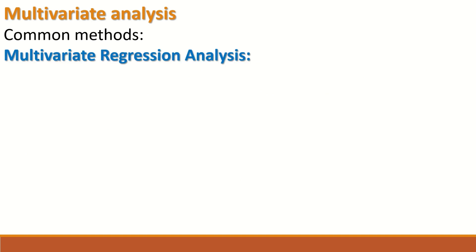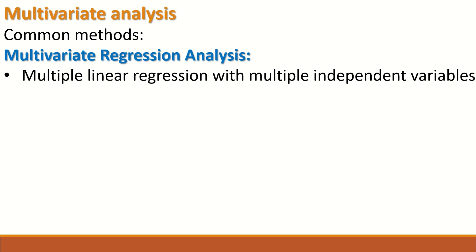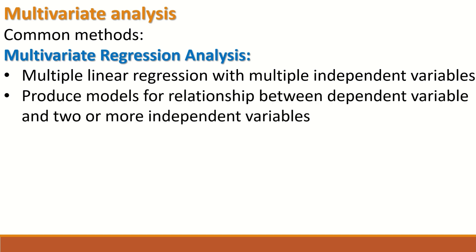Another type of multivariate analysis is multiple regression analysis. There are two types: simple linear regression, performed when there is one dependent variable and one independent variable; and multiple linear regression, performed when there is one dependent variable and multiple independent variables or predictors. The analysis produces a model describing the relationship between the dependent variable and two or more independent variables, with the objective of predicting the outcome.